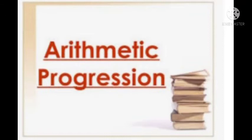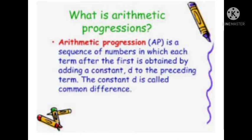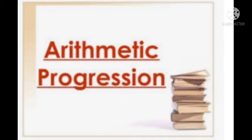In the examples above, we observe some number patterns. In some, we find that the succeeding terms are obtained by adding a fixed number. In others, we see squares of consecutive numbers and so on. In this chapter, we shall discuss one of these patterns in which succeeding terms are obtained by adding a fixed number to the preceding terms, known as arithmetic progression. We shall also see how to find the nth term and the sum of n consecutive terms, and use this knowledge in solving some daily life problems. So watch the video carefully as we start our new chapter, Arithmetic Progression.